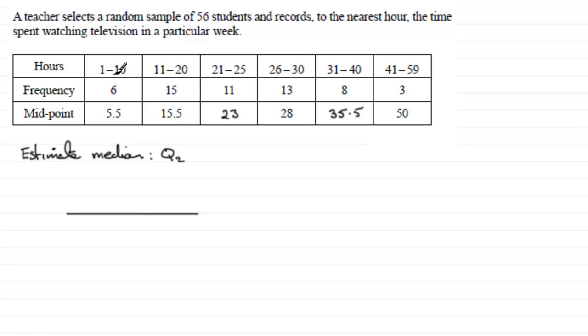And because these are written in order of size the 28th value is going to occur in this interval. Because you've got 6 in this interval 1 to 10 followed by another 15 in this interval. That's 21 up to this particular point. Once you've taken into account these next 11 values that brings you up to 32 values.